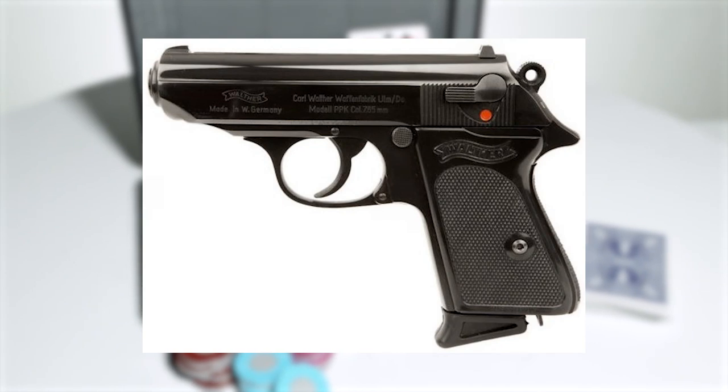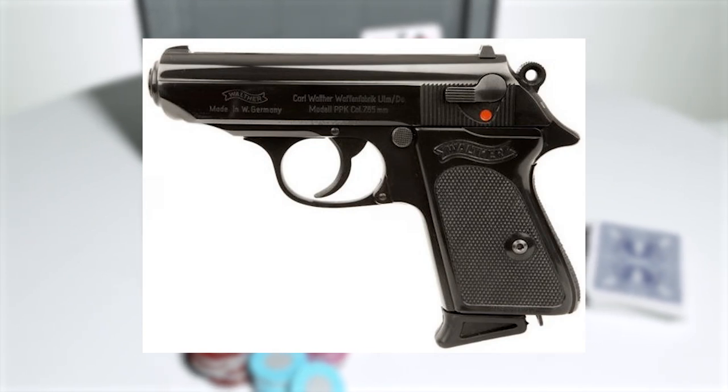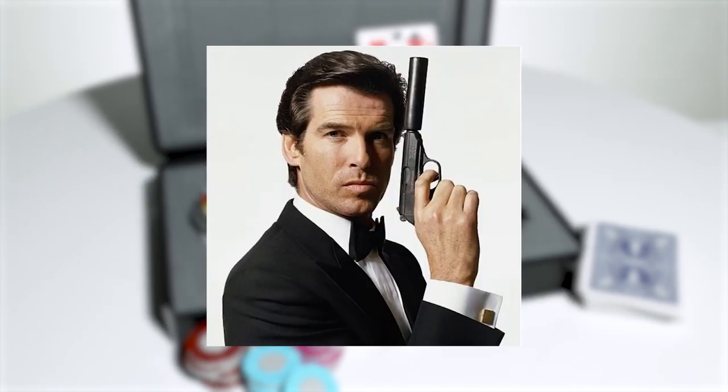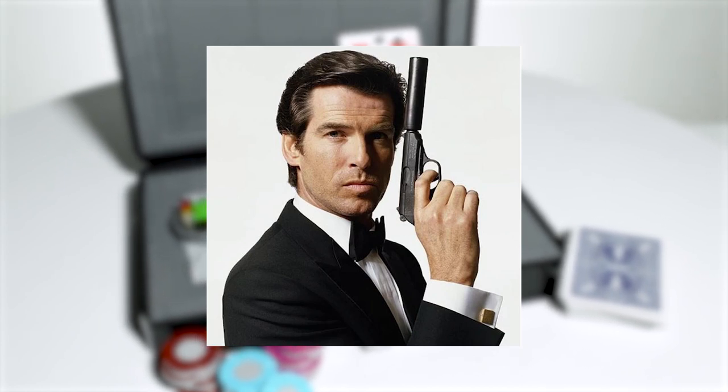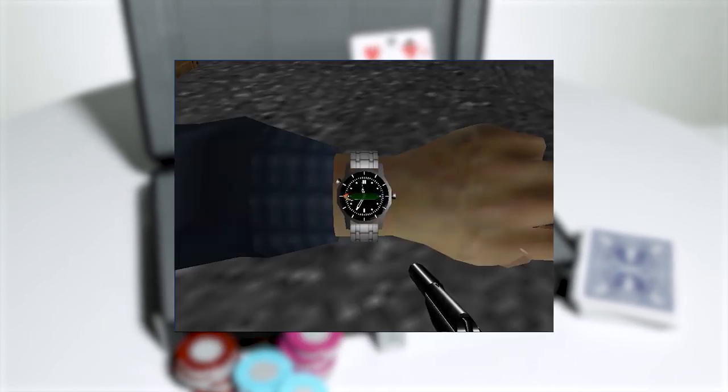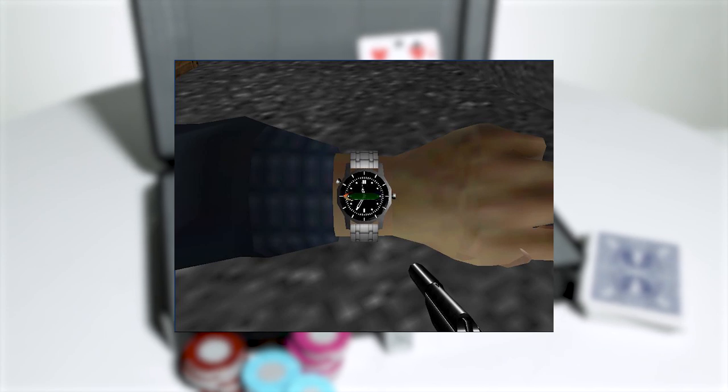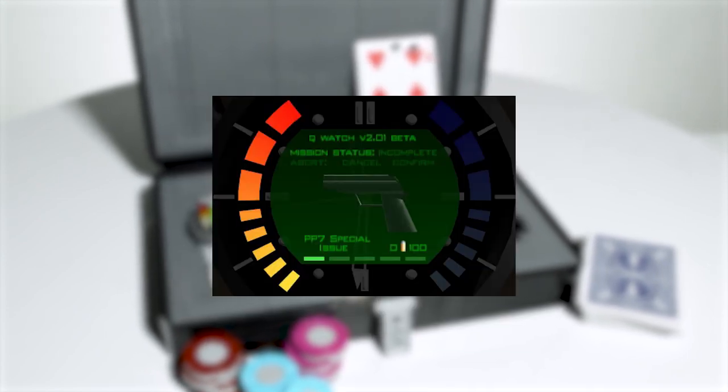The Walther PPK is a German handgun first released in 1930. It appears in the majority of the Bond films as Bond's sidearm and fires a .32 ACP round. The Q watch serves as the pause menu in GoldenEye on Nintendo 64. It has a menu interface that projects over the watch face.